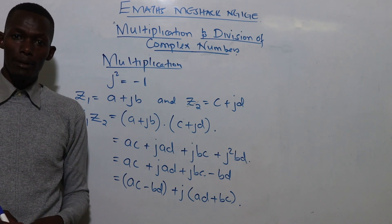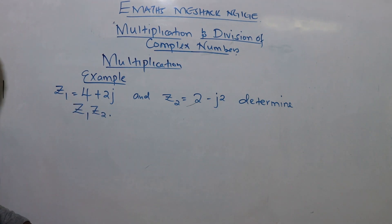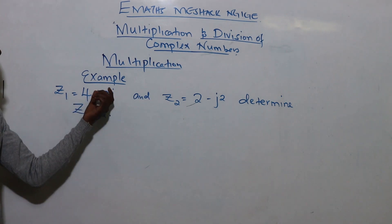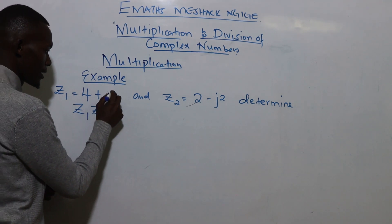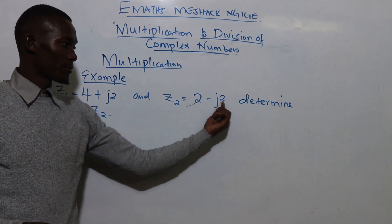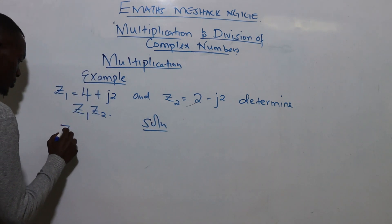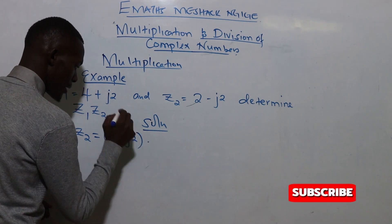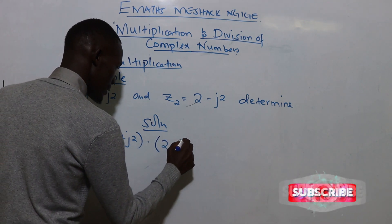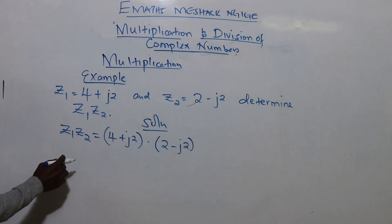Let's check one example. We are given two complex numbers: z1 = 4 + j2 and z2 = 2 − j2. We need to determine z1·z2. So z1·z2 is given by (4 + j2) multiplied by (2 − j2). We open the bracket the same way as before.